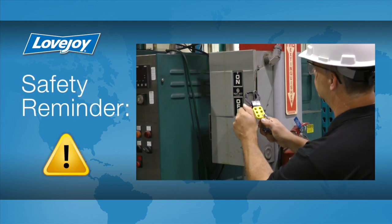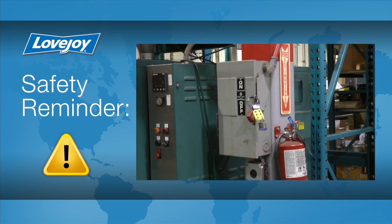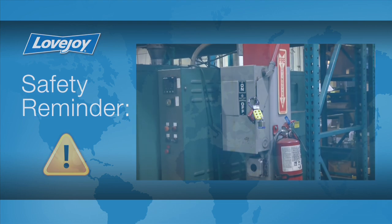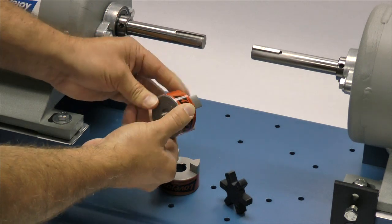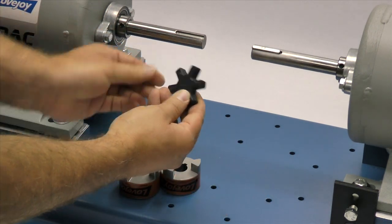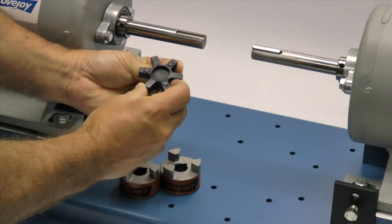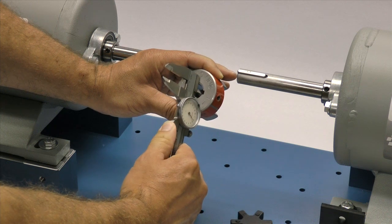Even though we have disconnected the power to this system, it is always a good idea to check and ensure that the power is off. When you receive the coupling, you should inspect each component to ensure that there are no visible defects, cracks, or damage from shipping. You may want to check the bore size for accuracy prior to continuing with the installation.